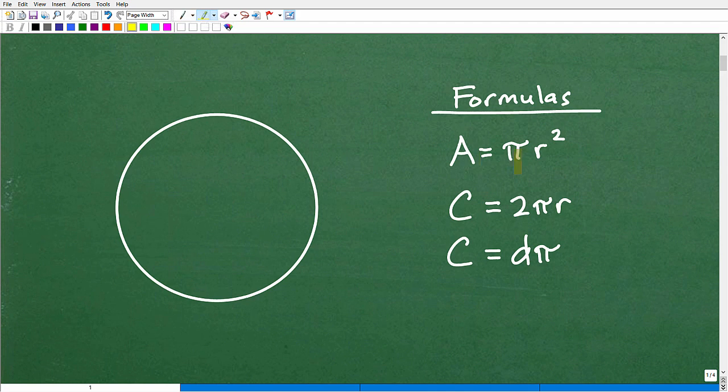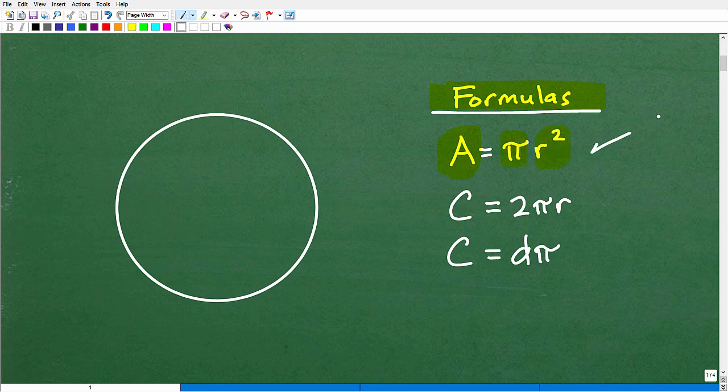Alright, so formulas that you need to know, and I would commit these formulas into your long-term memory. So the area of a circle is equal to pi r squared. This one you want to remember. Okay, there's a lot of formulas in math that you're given. Sometimes there's so many formulas, but these circle formulas, you should commit this to your long-term memory. So the area is equal to pi r squared.